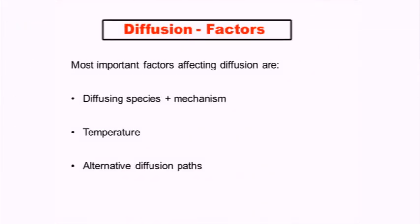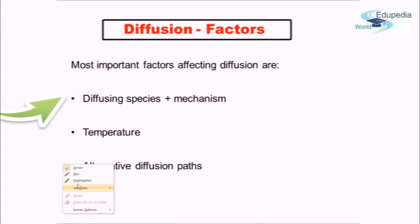Broadly speaking, the factors are: one, what is the diffusion species that we are talking about, in which material is diffusion taking place, and which atom we are talking about in that diffusion process. In addition to that, what is the mechanism of diffusion that is going to take place — whether it is going to be vacancy diffusion or interstitial diffusion — and what are the sizes of the atoms taking part.